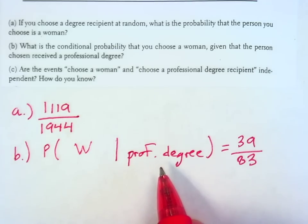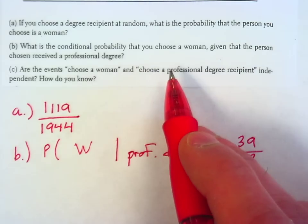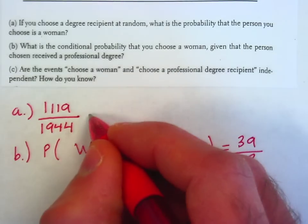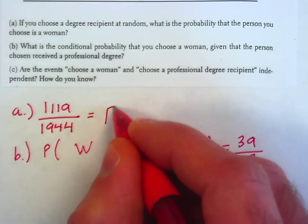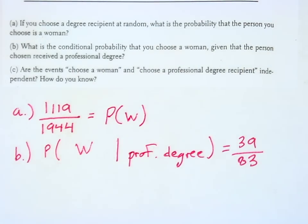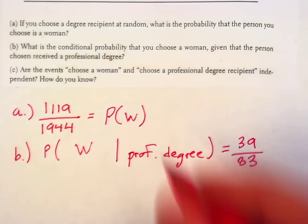So lastly, part C, are the events choose a woman and choose a professional degree recipient independent? Well, up here in part A, what we found was the probability of choosing a woman. So let's round that. So we'll write that as a decimal. It's easier to compare that way.